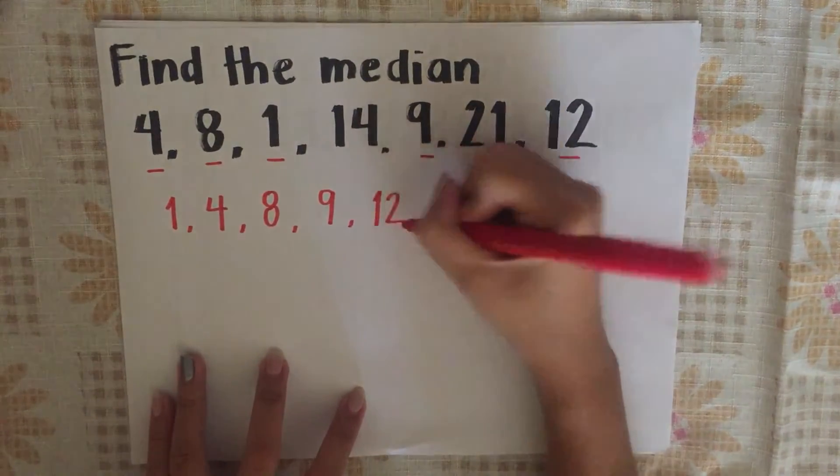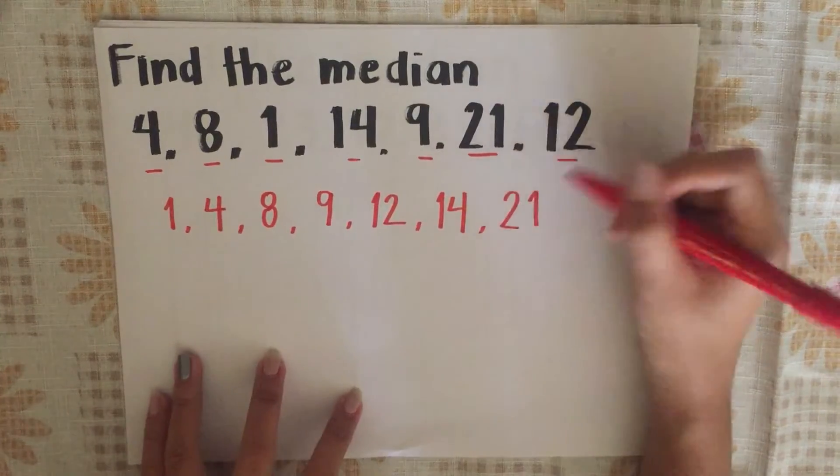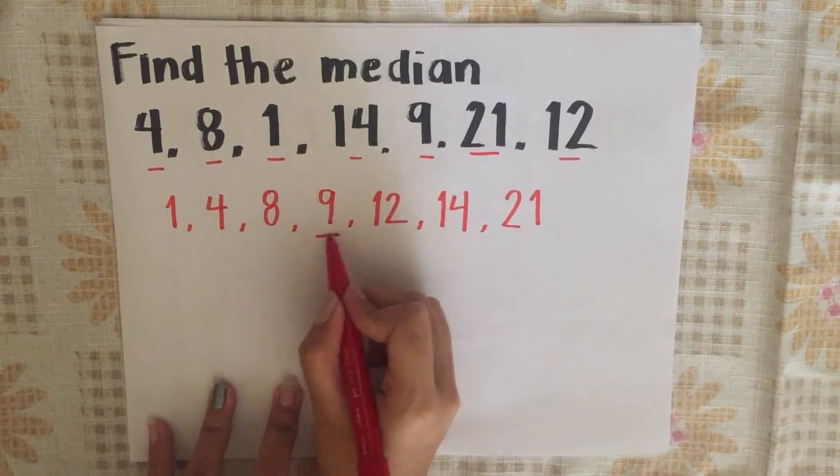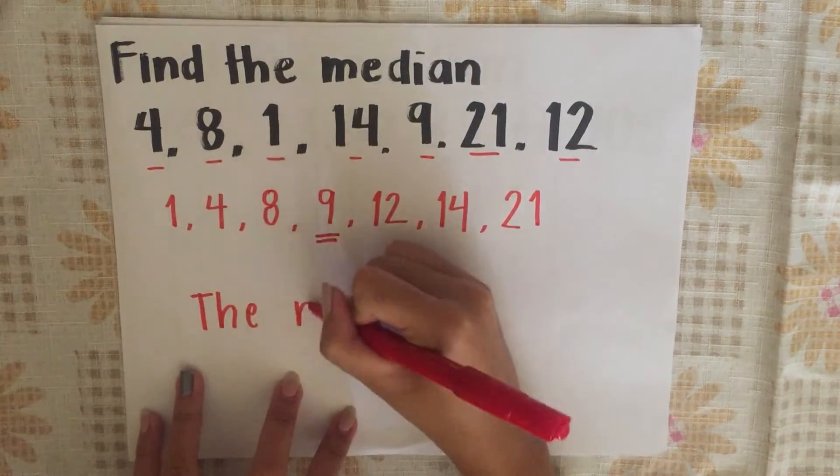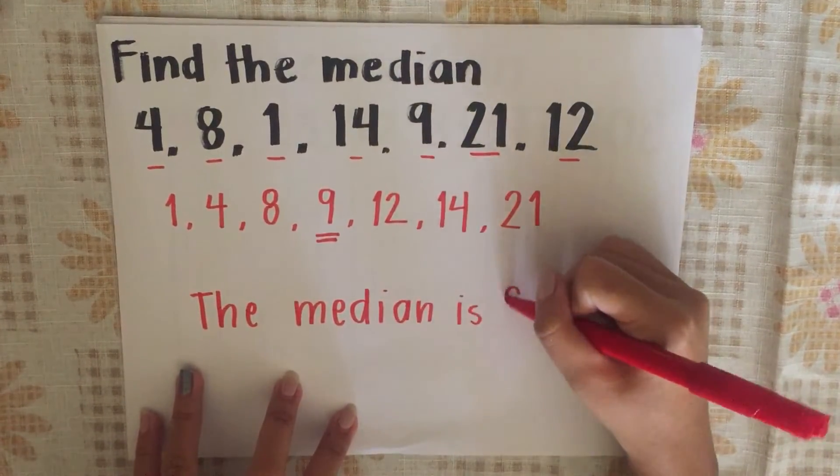Since the total number of the given values is odd, the middle term will be our median. In this sample, the middle term is the number 9. Therefore, our median is 9.